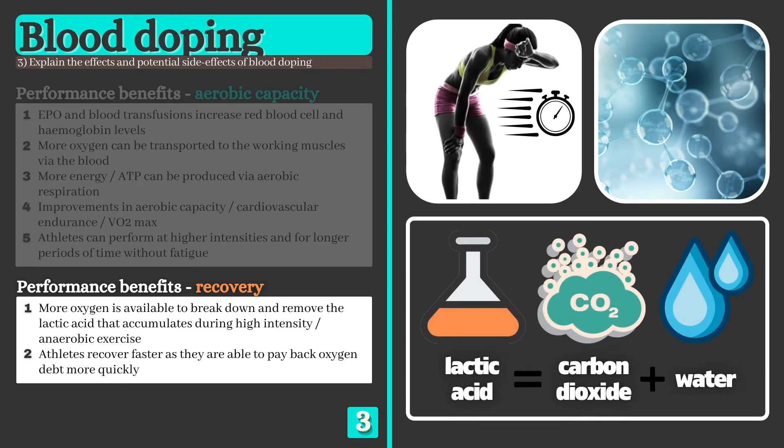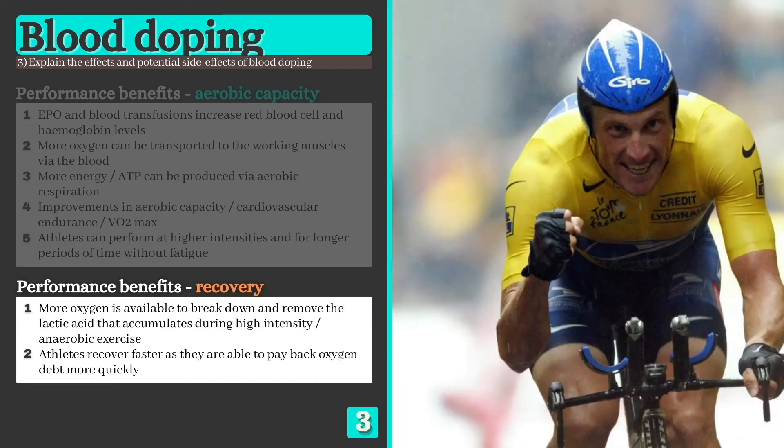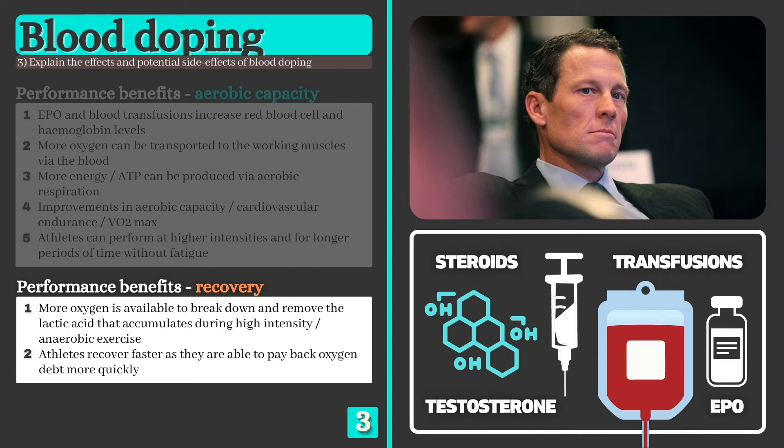Lance Armstrong, the most successful cyclist of all time, was involved in perhaps the most famous blood doping case to date. In 2013, he finally admitted to using a combination of testosterone, anabolic steroids, EPO injections and blood transfusions, which were often self-administered in hotel rooms or in the back of the team's support van. He was subsequently stripped of each of his seven Tour de France titles.